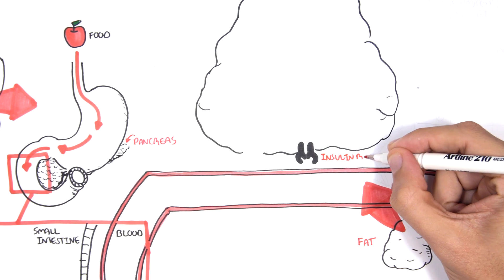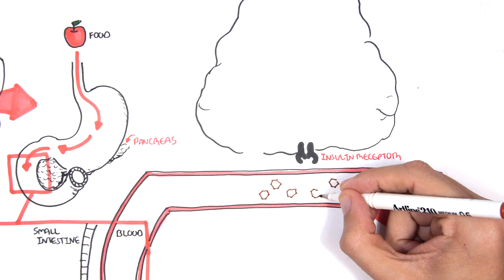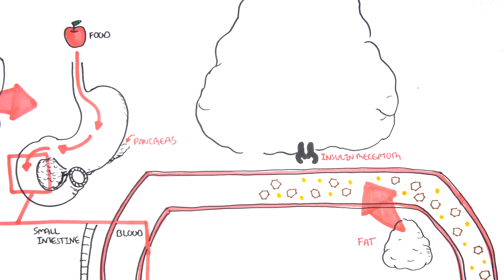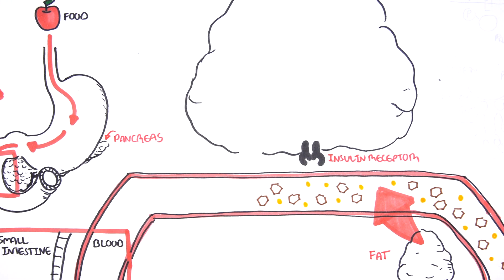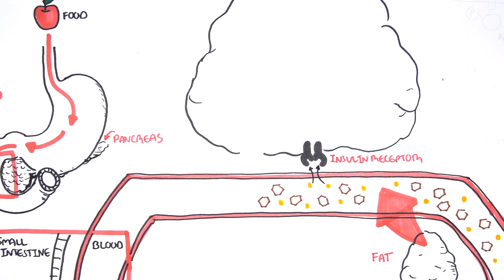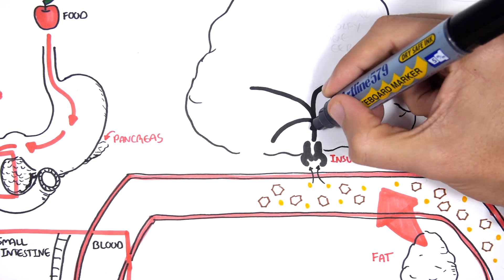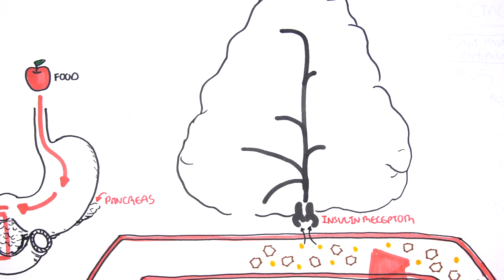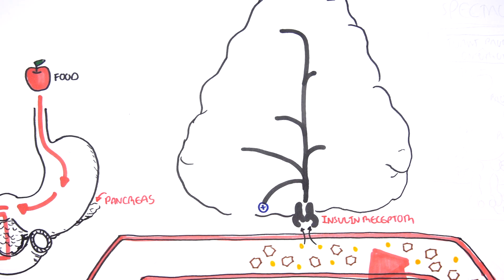The fat cells have insulin receptors on its cell surface. Insulin binds to these receptors in a very precise way, which triggers a sequence of events to occur inside the cell. A cascade of events, which will lead to a number of outcomes.